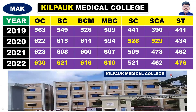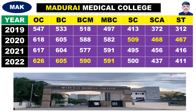Next — fourth — is Madurai Medical College. This college has a high outpatient footfall. OC is 626, BC is 605, BCM is 590, MBC is 591, SC is 509, SCA is 468, ST is 467.